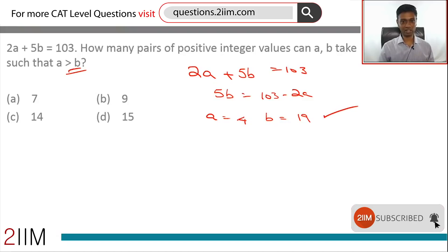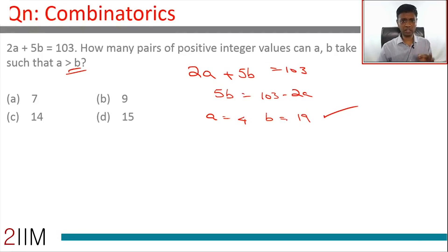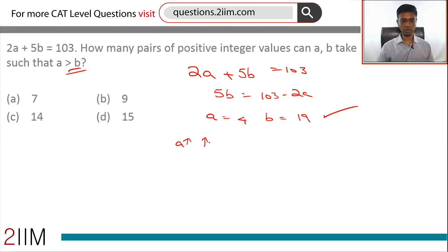Let's think about the next number that will work. a is 4, b is 19. That works. This is the smallest positive integer a that will work. Now if we increase a by 1, then 2a will add 2 to this. If a goes up by 1, the sum goes up by 2.